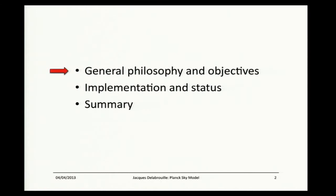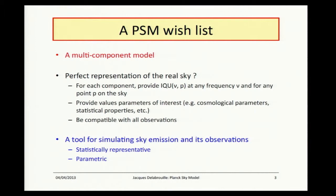Let's start with the general philosophy and the objectives. This is a PSM Planck sky model wish list. First of all, we want to model the sky as a multi-component model. Multi-component means there is an interpretation of the sky emission into different parts — not just maps of total sky emission at different frequencies, but also separated into different components. For each component, we would like to provide maps of I, Q, and U as a function of frequency and pixel, as close to reality as possible.